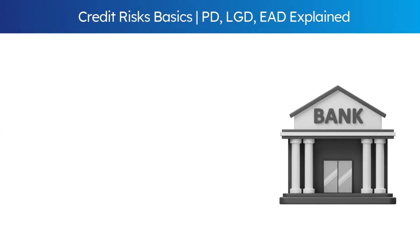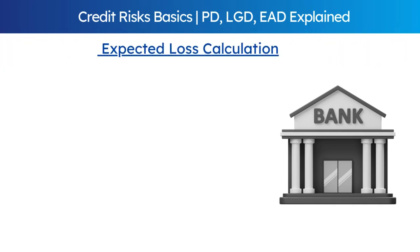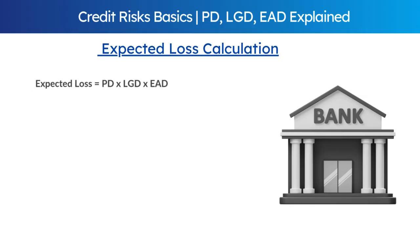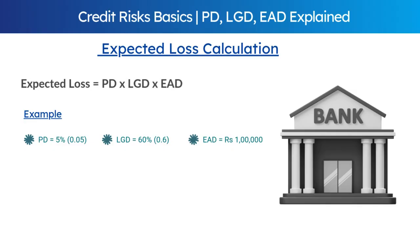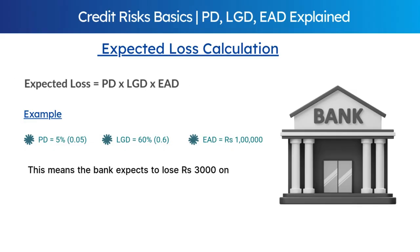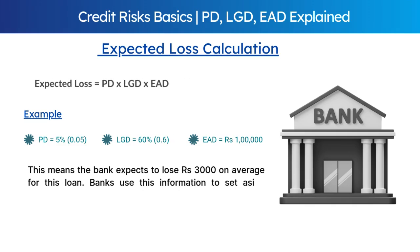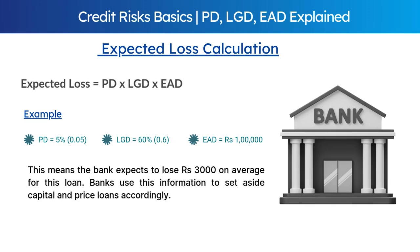Now, bringing it all together — let's discuss expected loss calculation. Expected loss is equal to PD multiplied by LGD multiplied by EAD. For example, if PD is 5%, LGD is 60%, and the outstanding exposure is Rs. 1 lakh, the bank expects to lose Rs. 3,000 on average for this loan. Banks use this information to set aside capital and price loans accordingly.